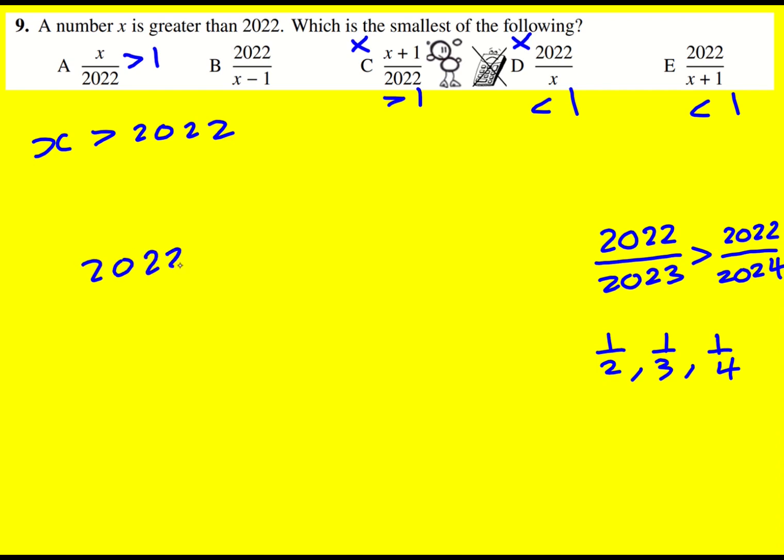basically 2022 over x minus 1, that is going to be bigger than 2022 over x, which is then going to be bigger than 2022 over x plus 1.